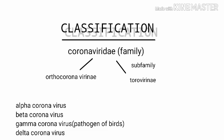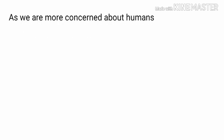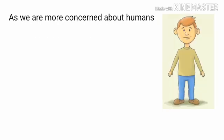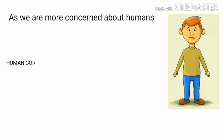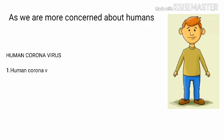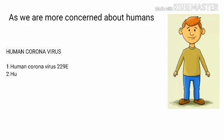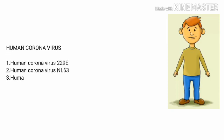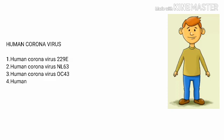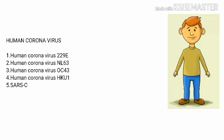The four genera are: alpha-coronavirus, beta-coronavirus, gamma-coronavirus, and delta-coronavirus. As we are more concerned about humans, the human coronaviruses are: human coronavirus 229E, human coronavirus NL63, human coronavirus OC43, and human coronavirus HKU1.